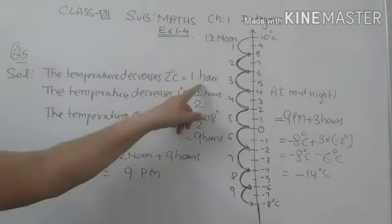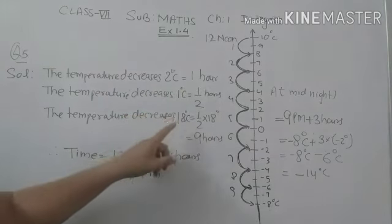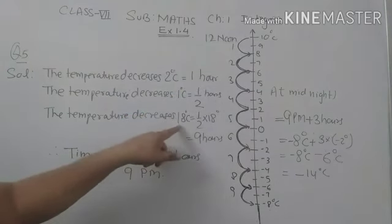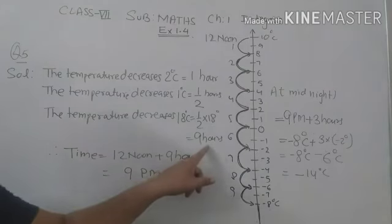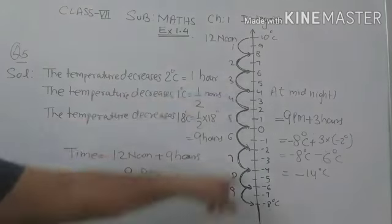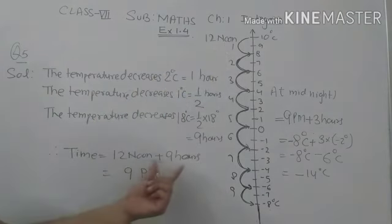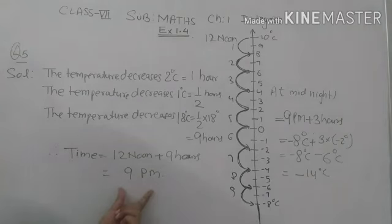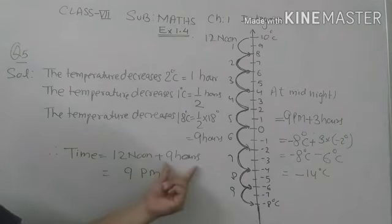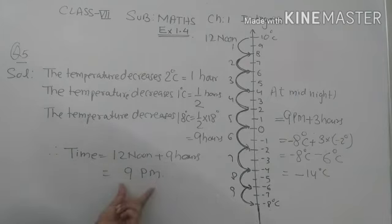2 degrees centigrade decreases in 1 hour, 1 degree centigrade in half hour, and 18 degrees centigrade decreases in 9 hours. So it takes 9 hours. After 12 noon, 9 hours gives what timing? 9 PM. After 12 noon plus 9 hours gives 9 PM. So 9 PM is the answer.